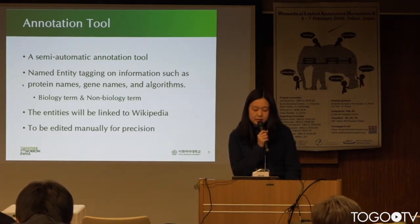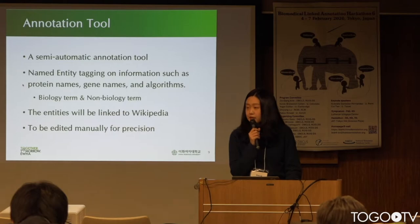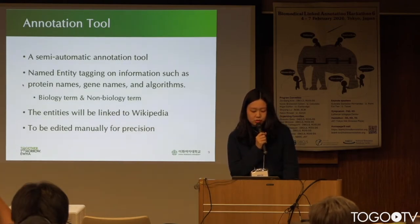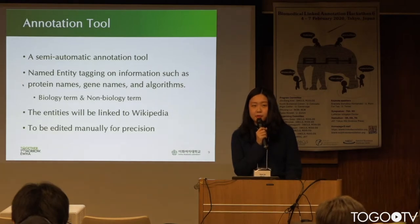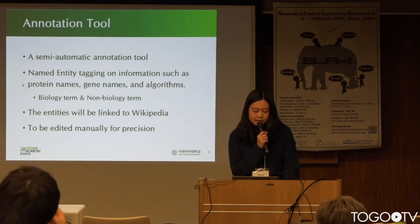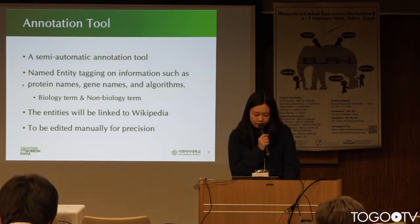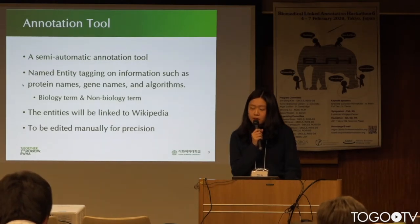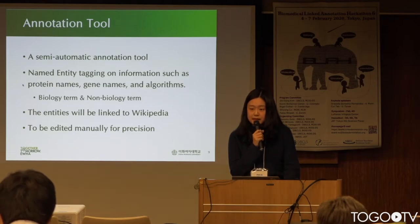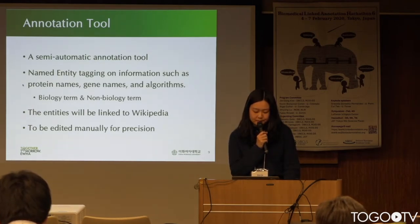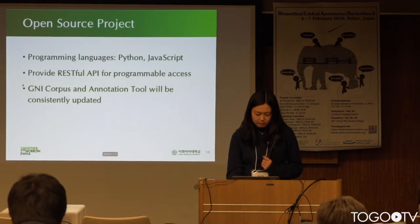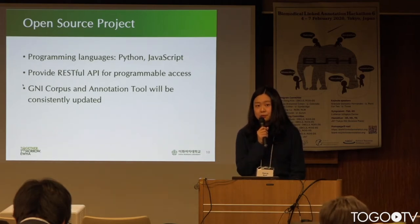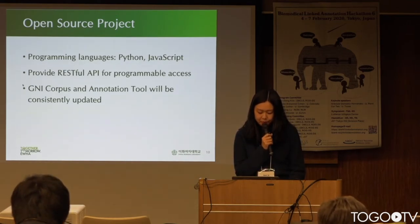Because the GNI corpus is automatically annotated, tagging errors are inevitable. So a semi-automatic annotation tool would conduct named entity tagging on information such as protein names, gene names, and algorithms. In this hackathon, my plan is to design a tool that distinguishes biology terms from non-biology terms among named entities. The entities will be linked to Wikipedia for evaluation, and this tool would also be designed to allow manual editing for precision. It would be an open-source project and provide a RESTful API for programmable access.